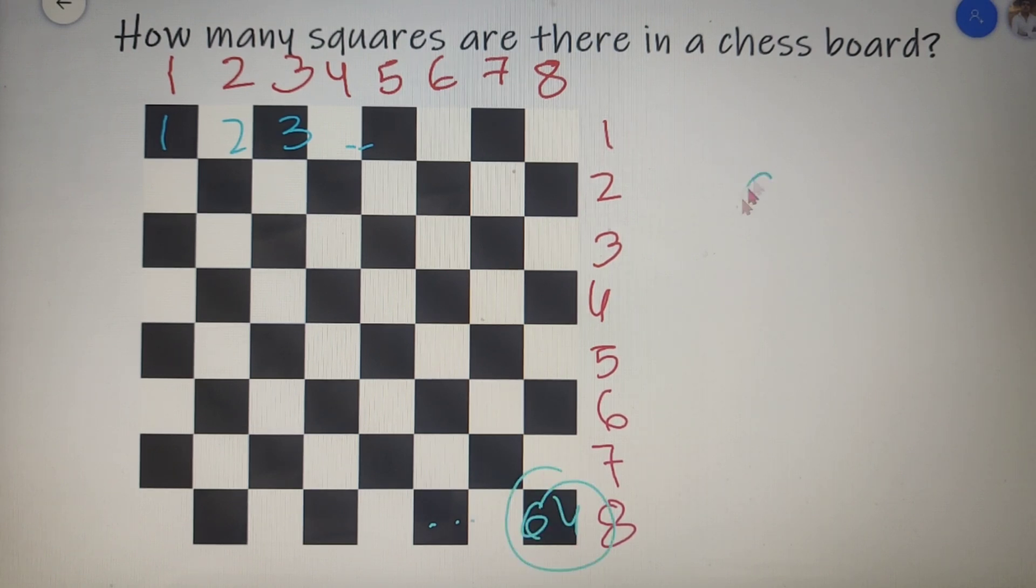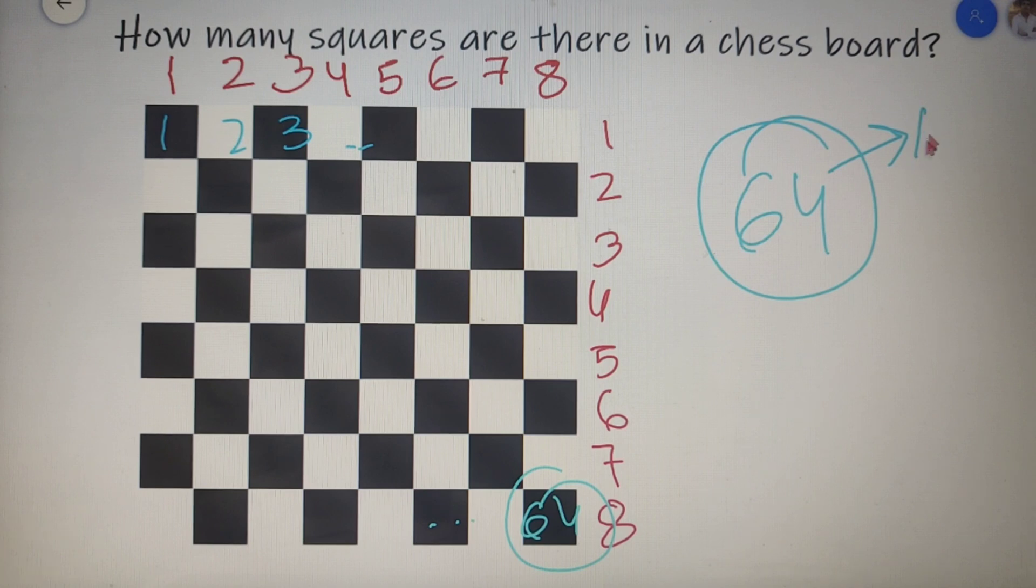So can I say that there are only 64 squares in a chessboard? The answer is both yes and no. So you may think that how it is both a yes and a no. The answer is yes that there are 64 squares in a chessboard but only of size 1 cross 1 and the answer is no as well because a chessboard cannot only have a square of 1 cross 1.